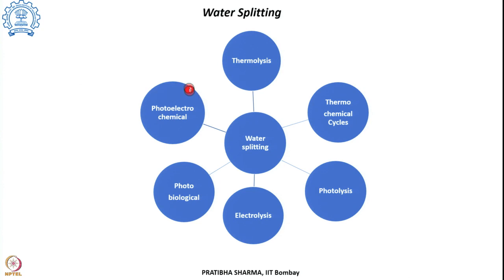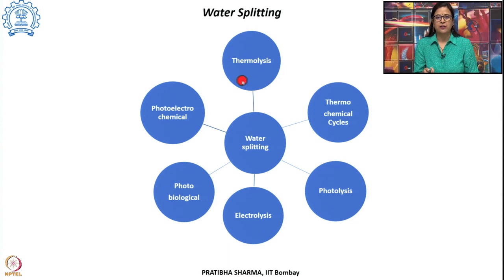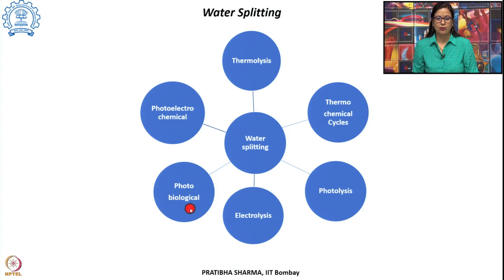One method for producing hydrogen is from water — splitting up of water. The energy required for water splitting can come from heat, in which case the process is called thermolysis. If heat and chemical steps are involved, it is thermochemical cycles. If energy comes from light, it is photolysis. With electrical energy input it is electrolysis; in biological systems with light it is photo-biological; and with electrochemical processes using light it is photo-electrochemical.